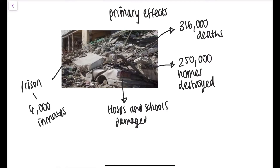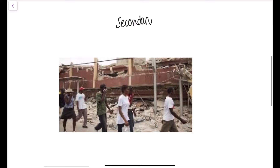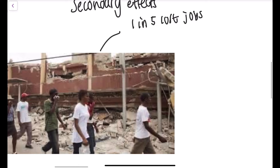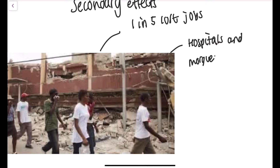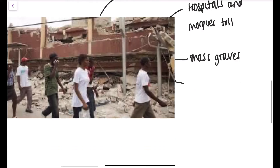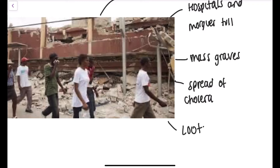Moving on to secondary effects — things that happened in the weeks and months after the earthquake — around 1 in 5 people lost their jobs, and the destruction of 250,000 homes left 1 million people homeless. Hospitals and morgues became full, meaning mass graves occurred and bodies had to be piled up on streets. Diseases such as cholera spread through the water. It was also very difficult to get aid due to issues at the airport, and looting became a problem as people took advantage of unoccupied buildings.